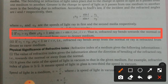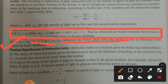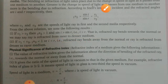The second case: if v₁ is less than v₂, meaning the velocity of light in the first medium is smaller compared to the second medium, then the refractive index of the second medium with respect to the first is less than 1, and the angle of incidence is less than the angle of refraction. The refracted ray bends away from the normal — the ray is refracted from denser to rarer medium.